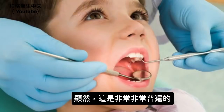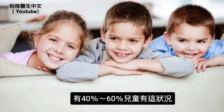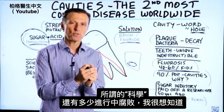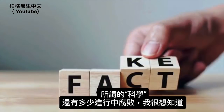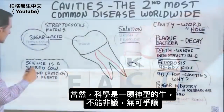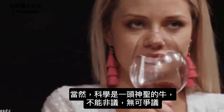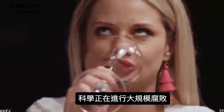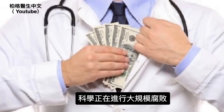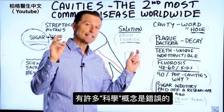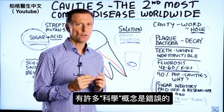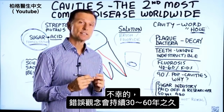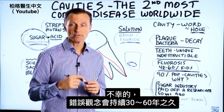And apparently it's very common — 40 to 60% of children actually have that condition. It's quite interesting to me how much corruption is still going on with so-called science. Science is treated as a sacred cow — beyond criticism, beyond debate. But what about the massive corruption that's going on? There are so many scientific concepts that end up being proven false 30 to 60 years later, unfortunately.